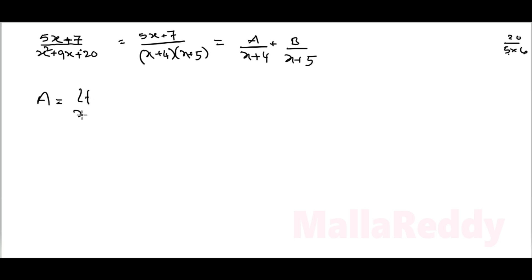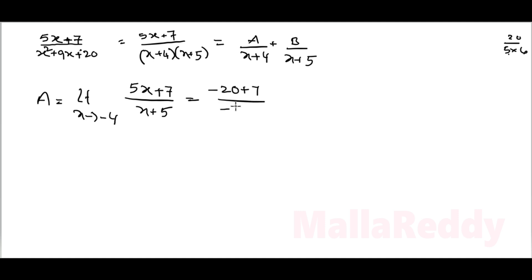A is equal to limit x tends to minus 4: take (5x+7) by (x+5), leaving x+4. Substituting: 5 times minus 4 equals minus 20 plus 7 by minus 4 plus 5 gives minus 13 by 1, so A value is minus 13.